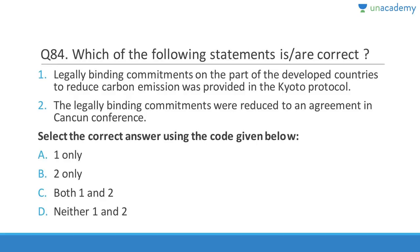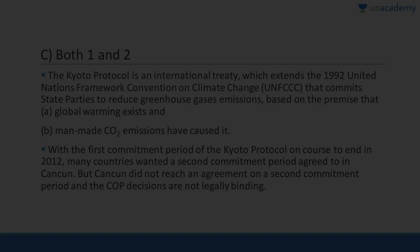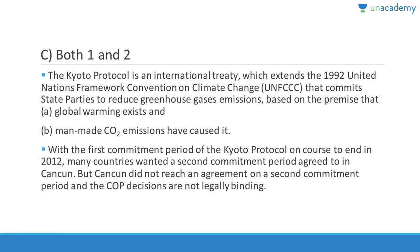Question 84: Legally binding commitment on the part of developed countries to reduce carbon emissions was provided in the Kyoto Protocol — correct. The legally binding commitments were to be agreed upon at the Cancun conference — also correct. The Kyoto Protocol is an international treaty which extends the 1992 UNFCCC, committing state parties to reduce greenhouse gas emissions based on the premise that global warming exists and man-made CO2 emissions have caused it. With the first commitment period ending in 2012, many countries wanted a new agreement reached in Cancun, but it was not finalized. Cancun is in Mexico.